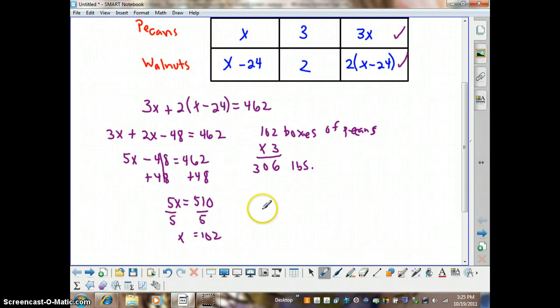If we want to double check to make sure that we have the right answer for this particular problem, because remember the total weight is 462 pounds, we can figure out how much the walnuts would weigh. First of all, there was 24 fewer boxes of walnuts than pecans. So we'll subtract 24 from 102, and we'll get 78.